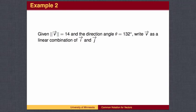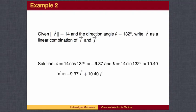In this second example, we are given the magnitude and direction of the vector V and need to convert to the rectangular form. The x-coordinate is the length times the cosine of the angle, and the y-coordinate is the length times the sine of the angle.